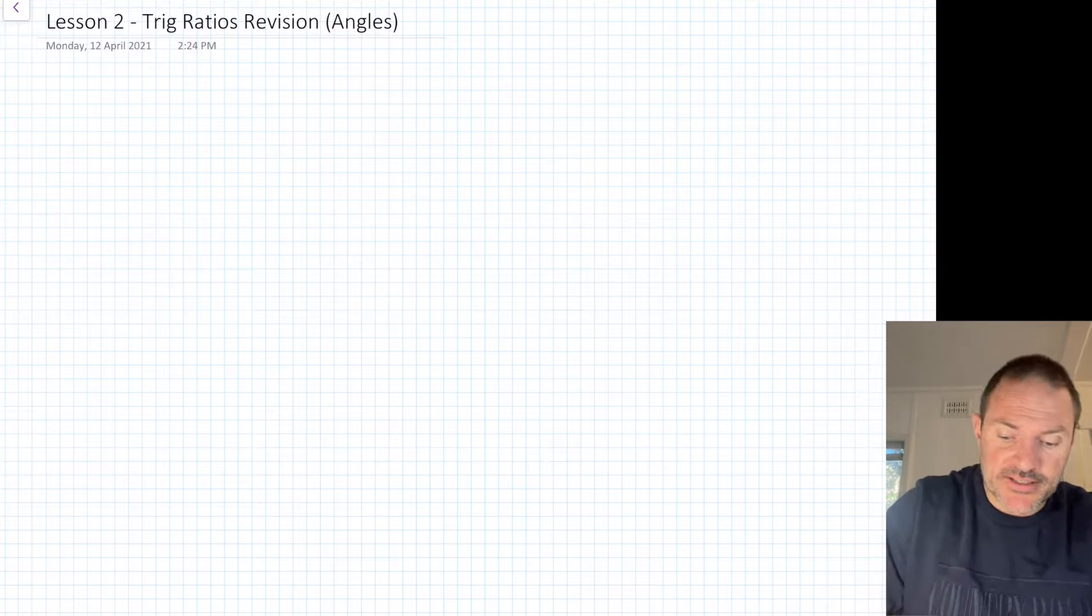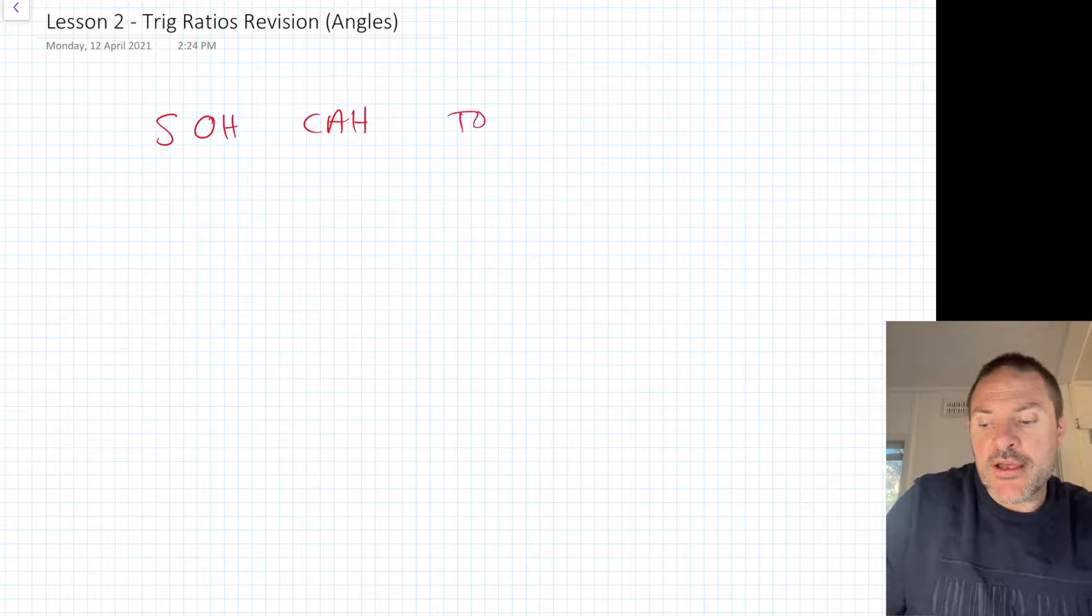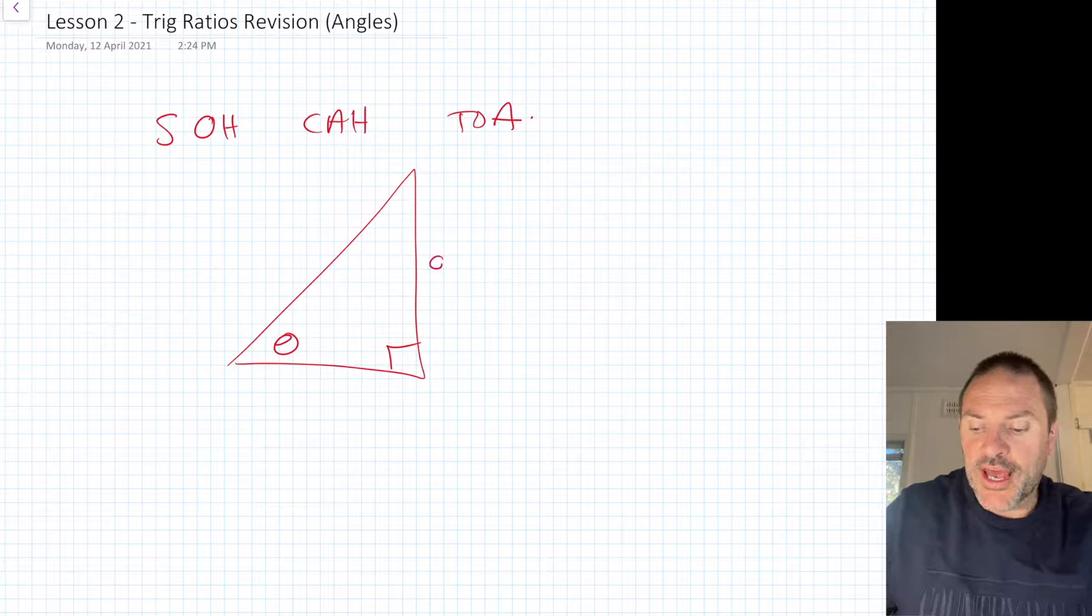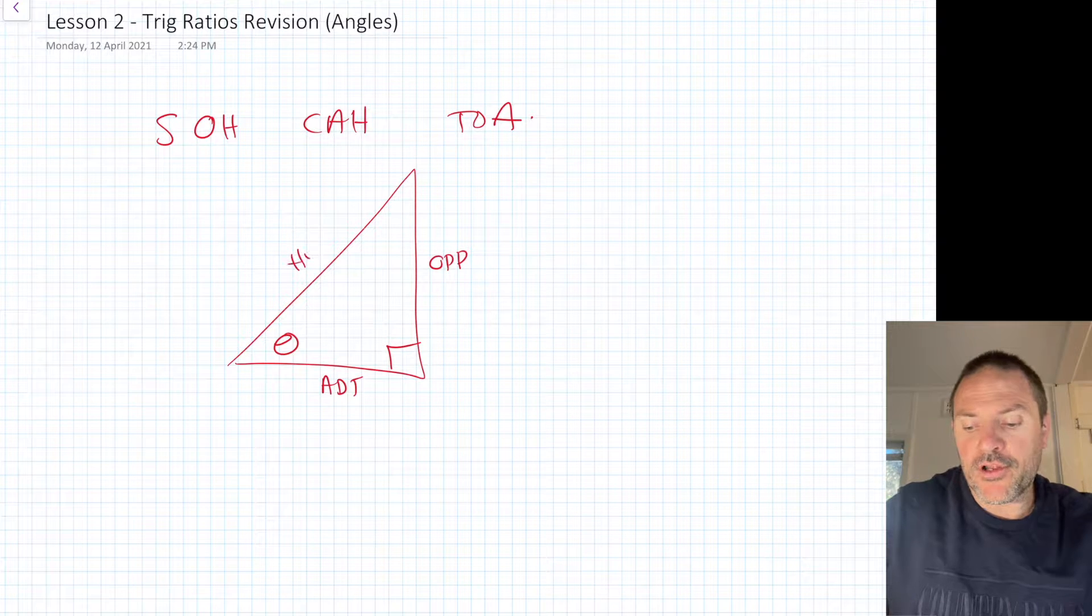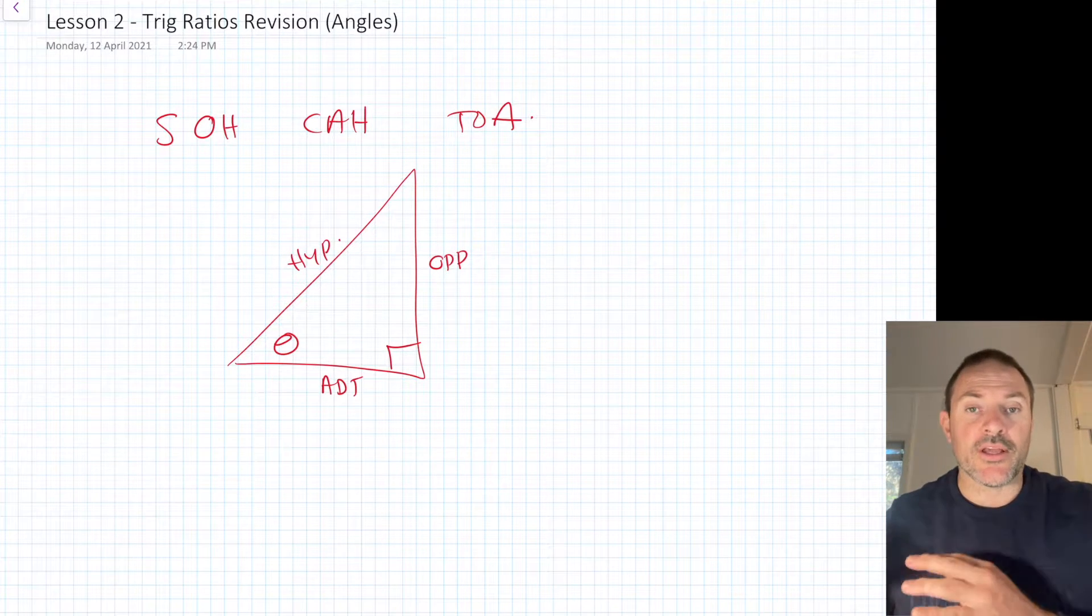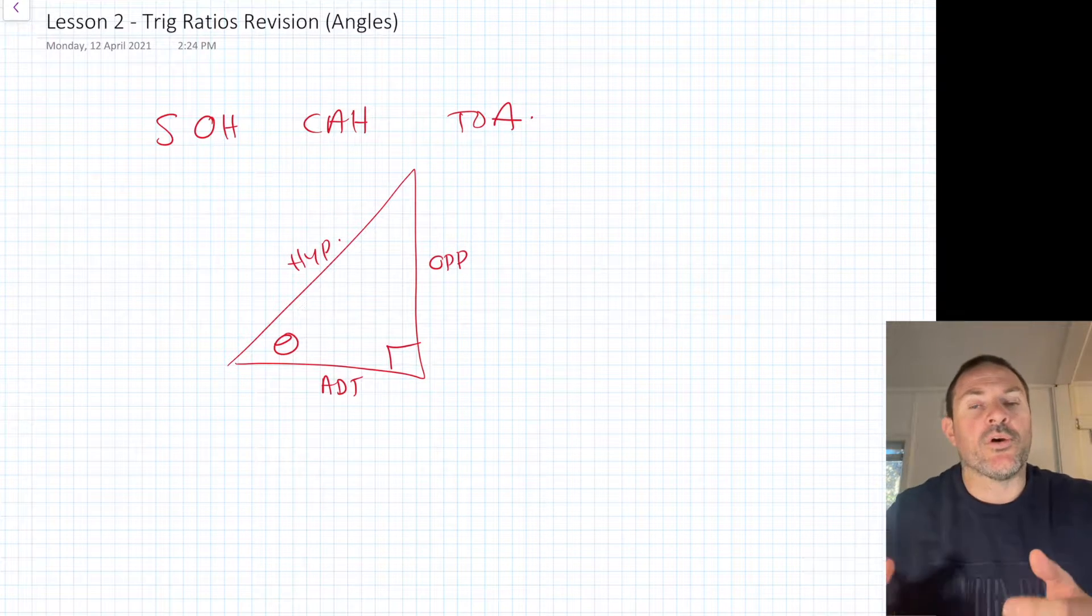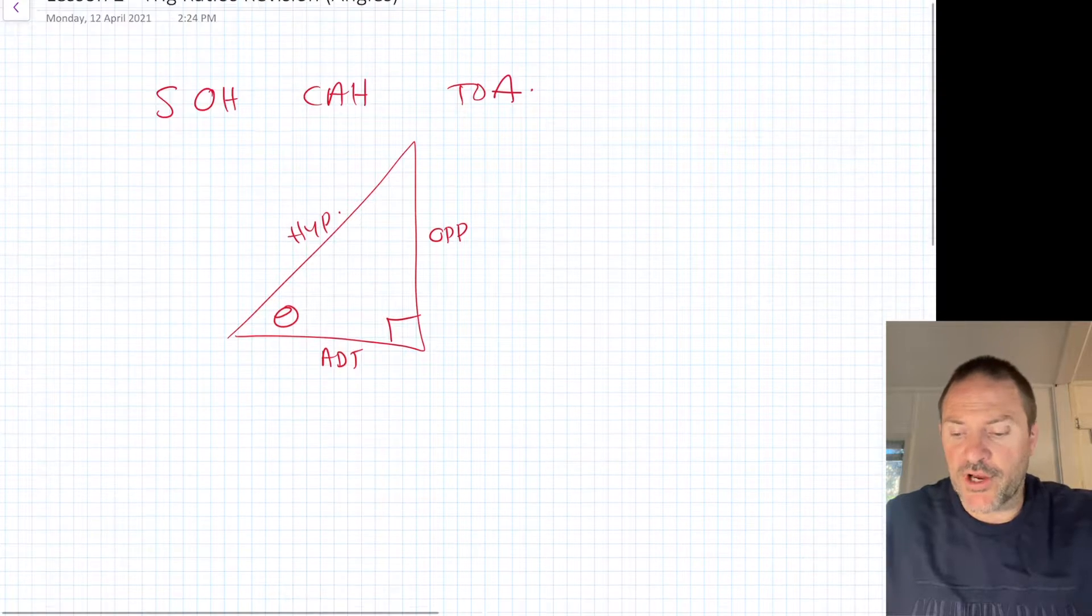Just remembering SOHCAHTOA, that's what we looked at last lesson. Making sure in your triangle we're looking at our opposite, our adjacent, our hypotenuse and identifying which rule that we are using. That's the most important thing. Once you create your equation, we want to solve it. Very similar today, but there's a little trick to it which hopefully you remember.